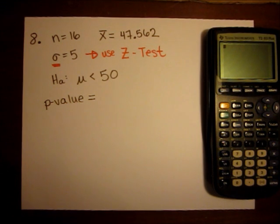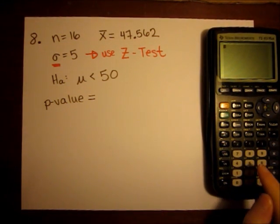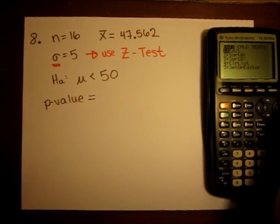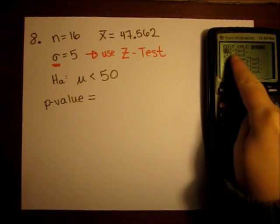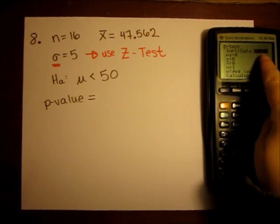To find my p value, I'm going to use z test in my calculator. To get there, I go to stat and then tests, and then my first option is z test. Make sure the input is stats.